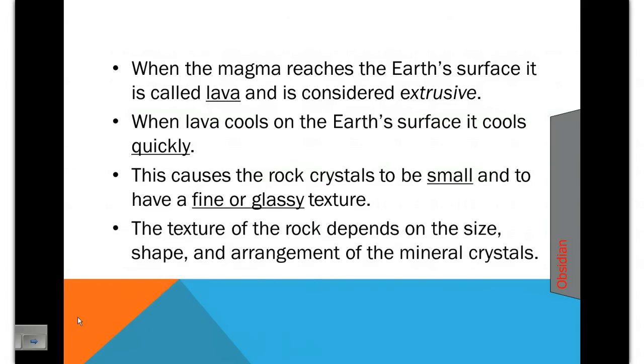Now with igneous rocks, the texture depends on basically its area of formation. One thing that I didn't mention here is the vesicular rocks like the pumice that I showed you in class today. Vesicular means that it has gas pockets, and it almost looks like Swiss cheese.